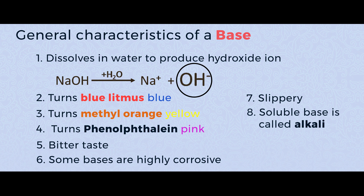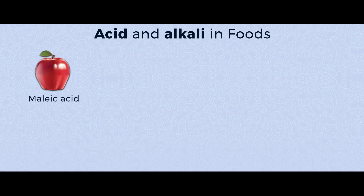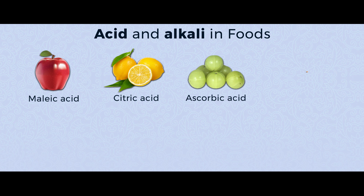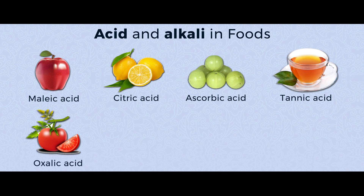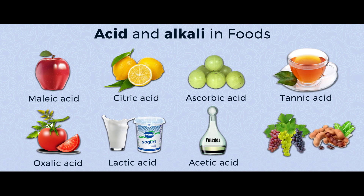Now since we know the general characteristics of acid and base, let's look at some acid and base present in our food. In apple we have malic acid. In citrus fruits like lemon and oranges, we have citric acid. In gooseberry, ascorbic acid. In tea, tannic acid. Tomato has oxalic acid. Yogurt, curd, and milk all have lactic acid. In vinegar, acetic acid. In grapes and turmeric, we have tartaric acid.